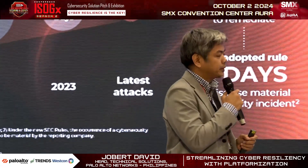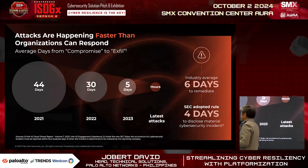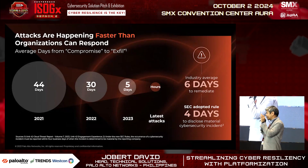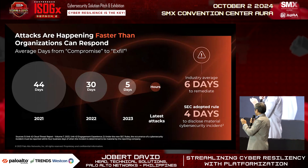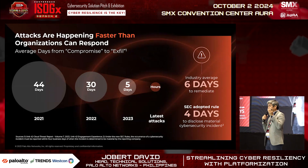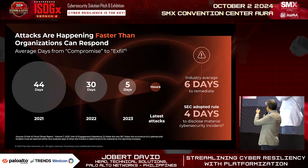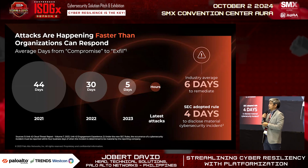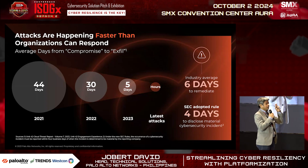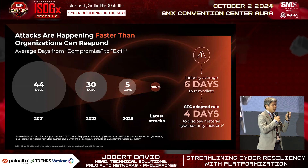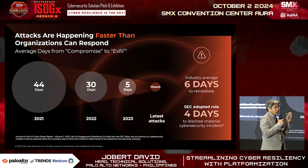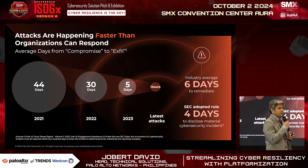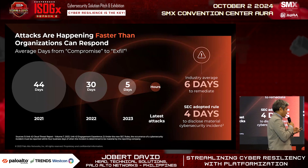Attacks are happening faster than organizations can respond. About three years back, it took about 44 days to compromise and exfiltrate data. As we've seen over the past couple of years, it evolved — from 44 to 35 days. And the latest we've seen so far, it's in hours. The problem is we don't even know — it could be minutes before they can complete a compromise and exfiltration.